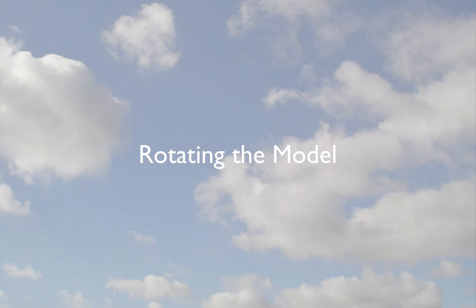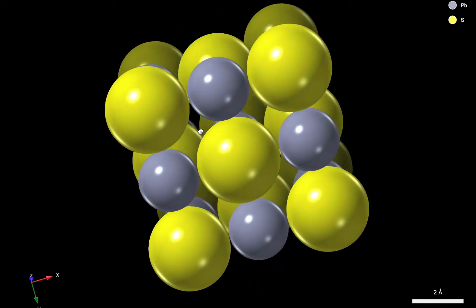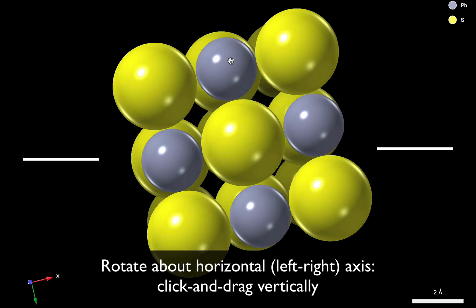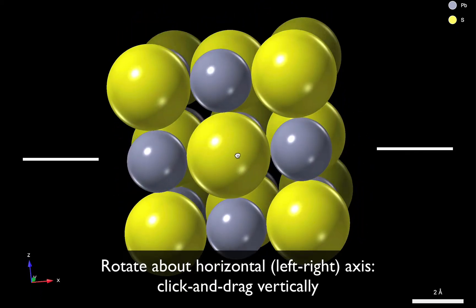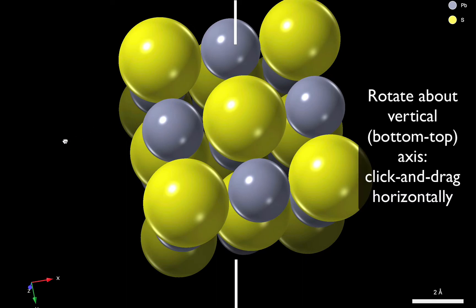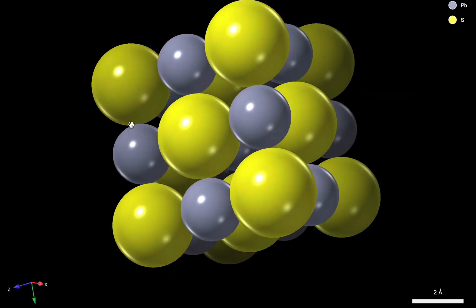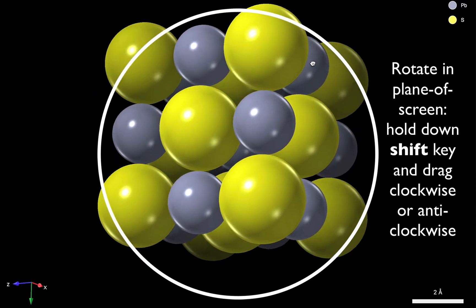Now let's talk about rotation. The easiest way to rotate is simply to click and drag with the mouse. So to rotate about a horizontal axis, we can click and drag vertically. So imagine that there's a rotation axis passing from left to right across the screen. Now to rotate about a vertical axis, then we drag left and right. And to rotate about an axis that passes out of the screen towards the viewer, we can hold down the Shift key on the keyboard, and then we can rotate in a clockwise or an anti-clockwise manner.